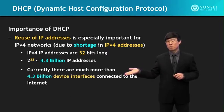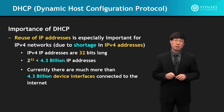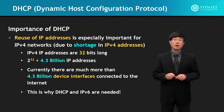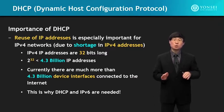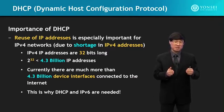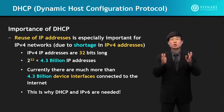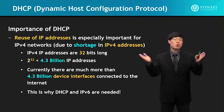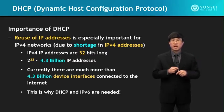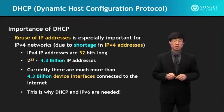Currently there are much more than 4.3 billion devices, so this becomes very important — this is why DHCP is needed. In addition, this is one of the major reasons we needed to change to IPv6, such that we have not a 32-bit but a 128-bit address, giving us much more address combinations so that we will not run out of IP addresses in the near future.